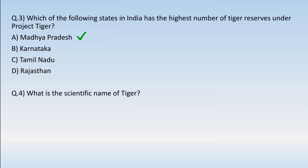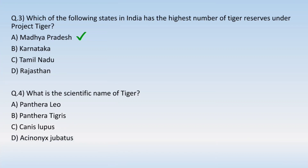The last question: what is the scientific name of the tiger? Options are: (A) Panthera leo, (B) Panthera tigris, (C) Canis lupus, or (D) Acinonyx jubatus. If we use our common sense, we can understand that Option B is the correct one — Panthera tigris is the scientific name of the tiger.